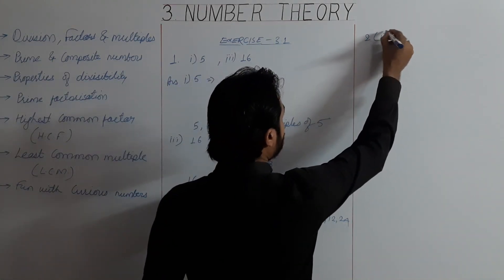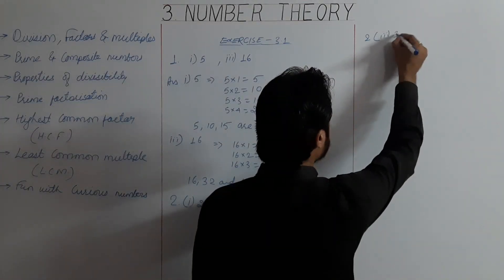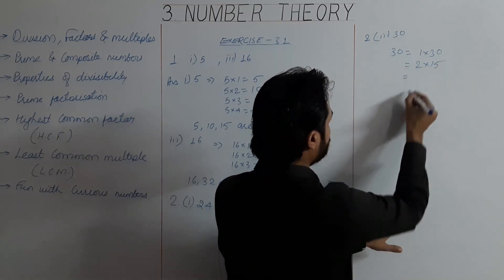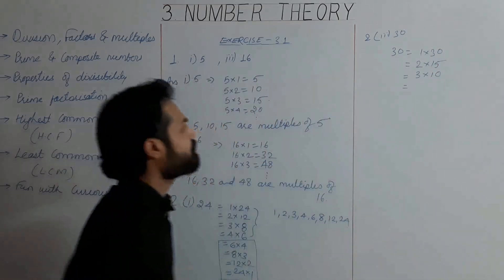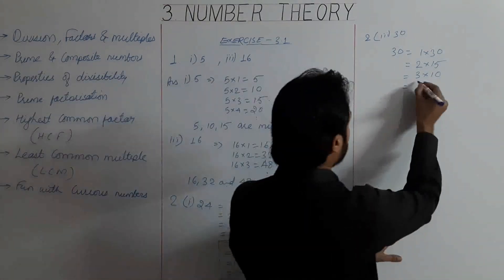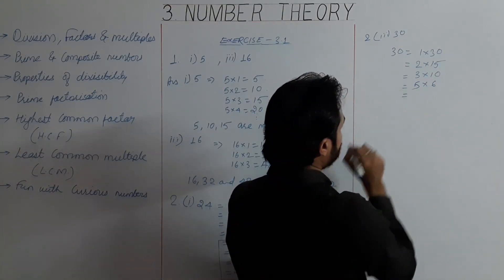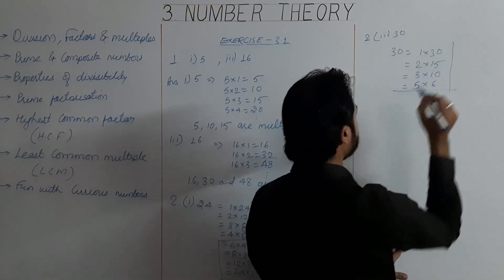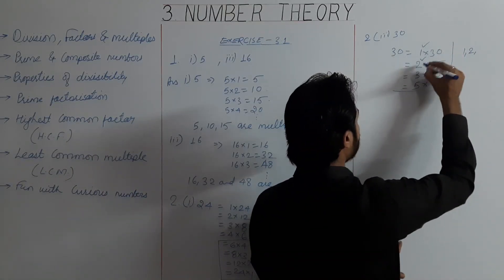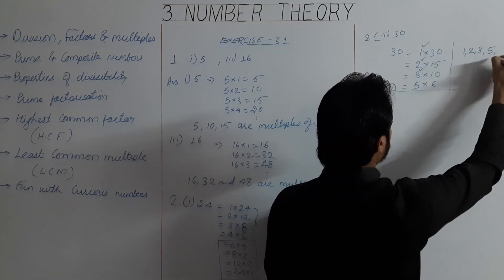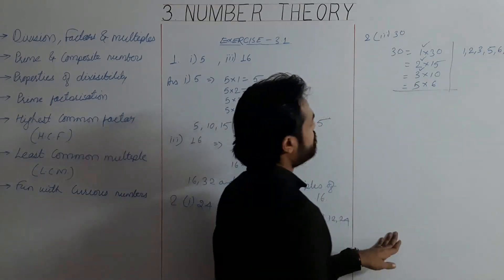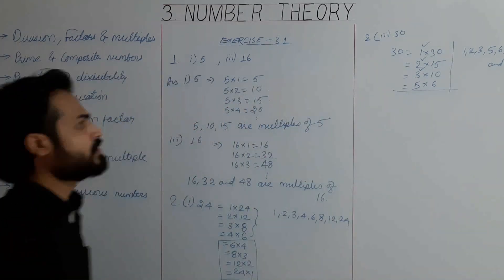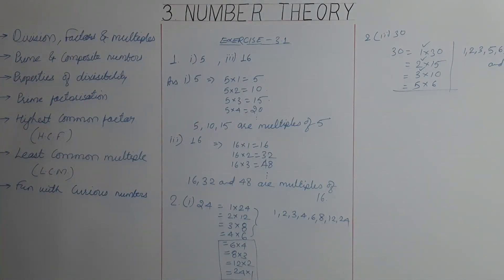For part 3, the number is 30. For 30: 1 into 30, 2 into 15, 3 into 10, then 4 — no, then 5 into 6, and 6 into 5. These are all possible combinations. So the factors are 1, 2, 3, 5, 6, 10, 15, and 30. These numbers are factors of 30.